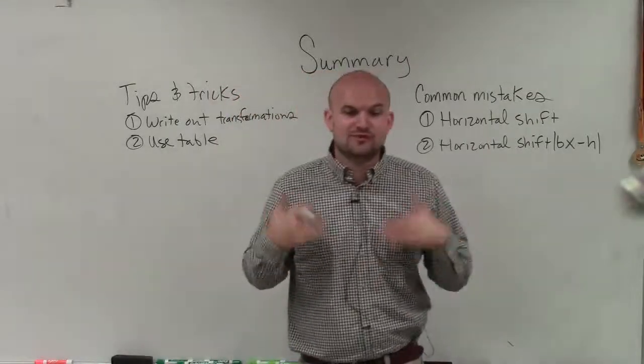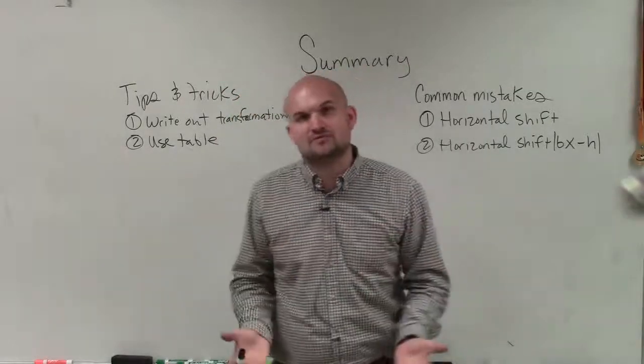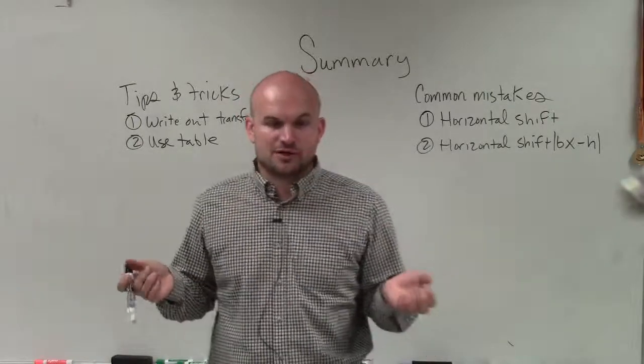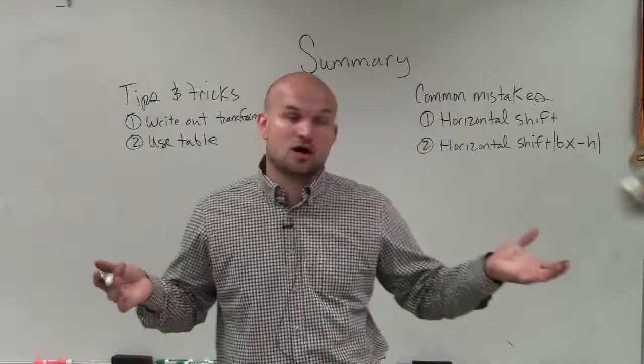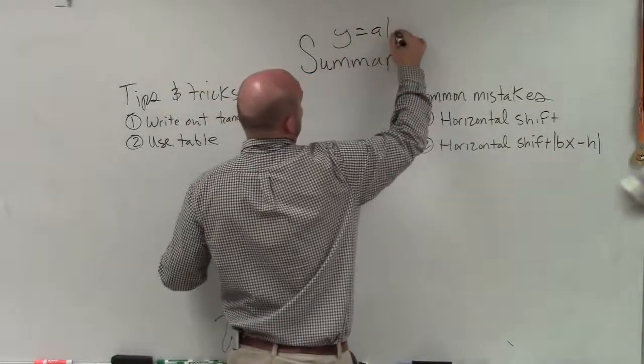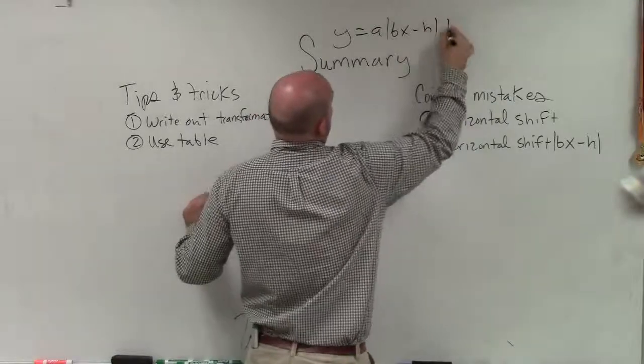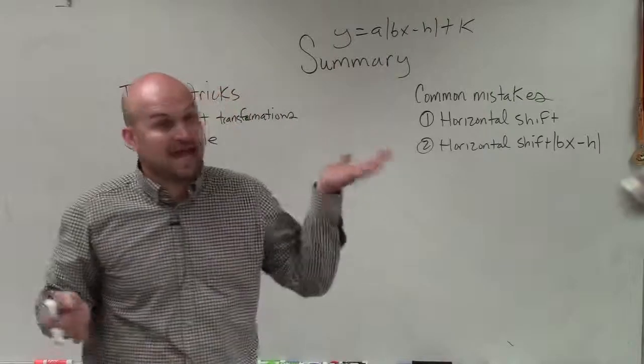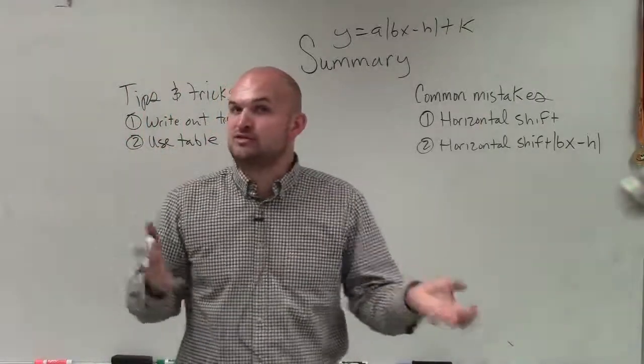So first of all, I'd like to review the process for solving absolute value equations. Basically, what we're going to do is when we have an absolute value equation, we're going to want to make sure it's first written in our transformation form, which is y equals a times bx minus h plus k. And then what we're going to do is identify which of those values we have, a, b, h, and k, and identify the transformations.